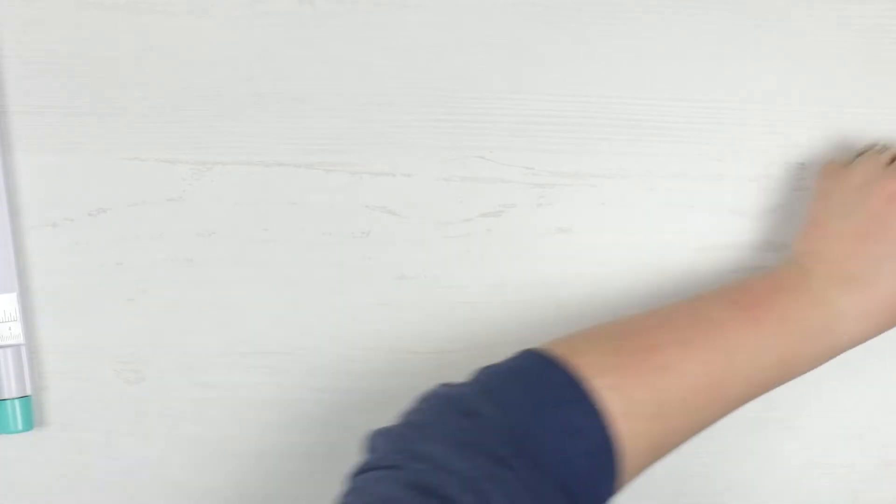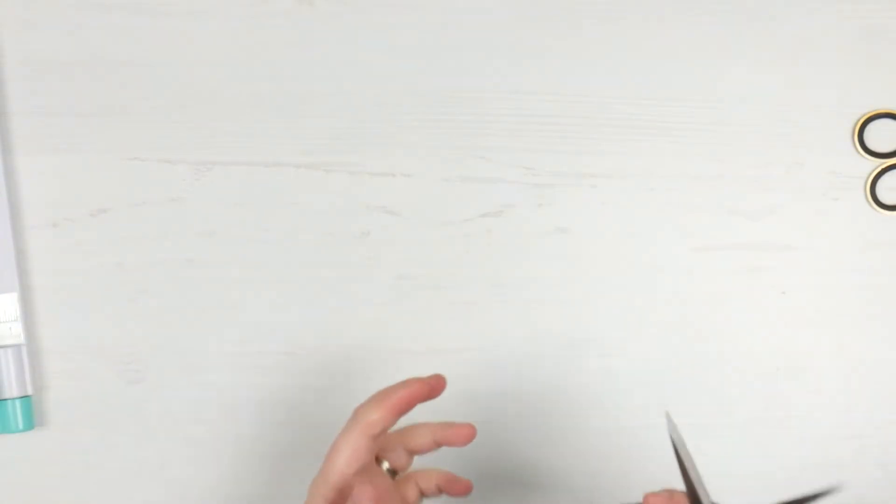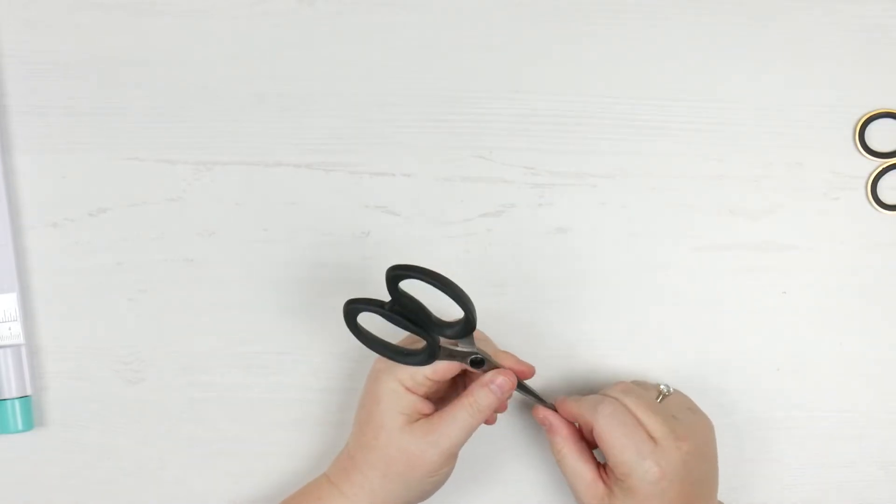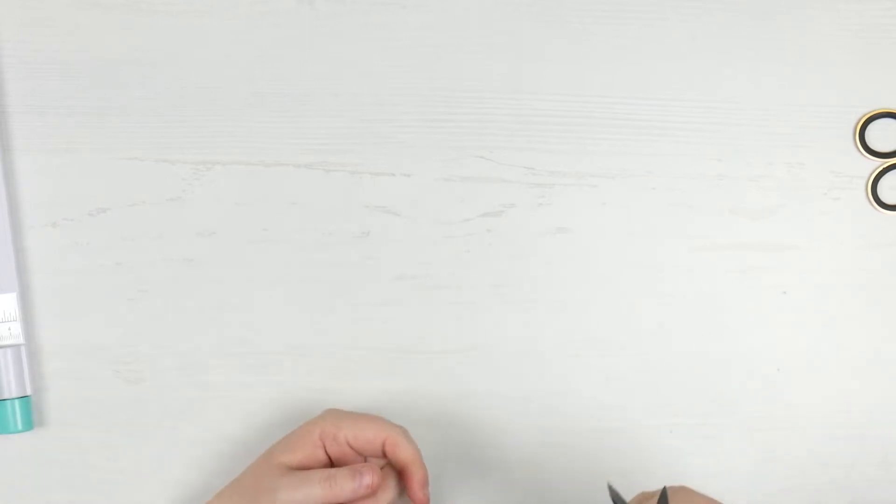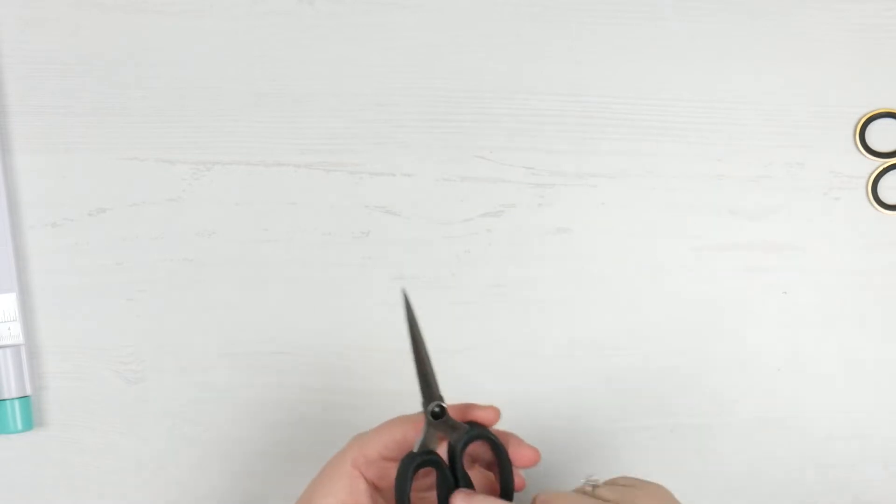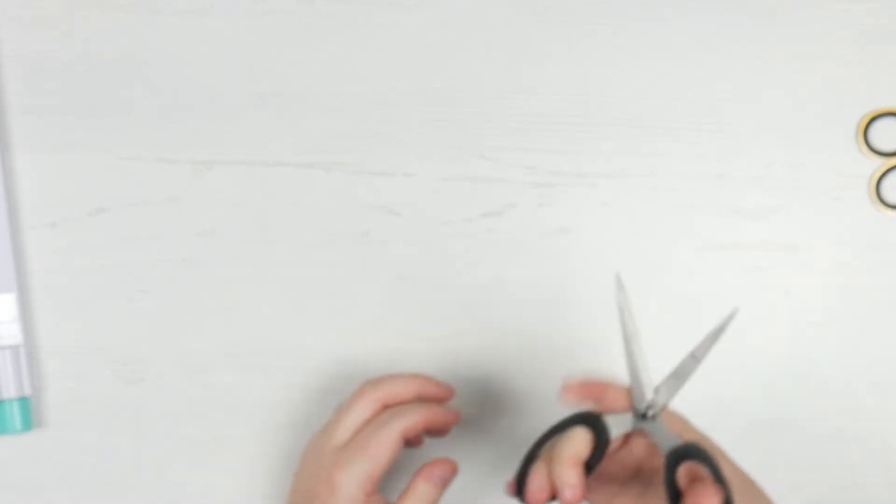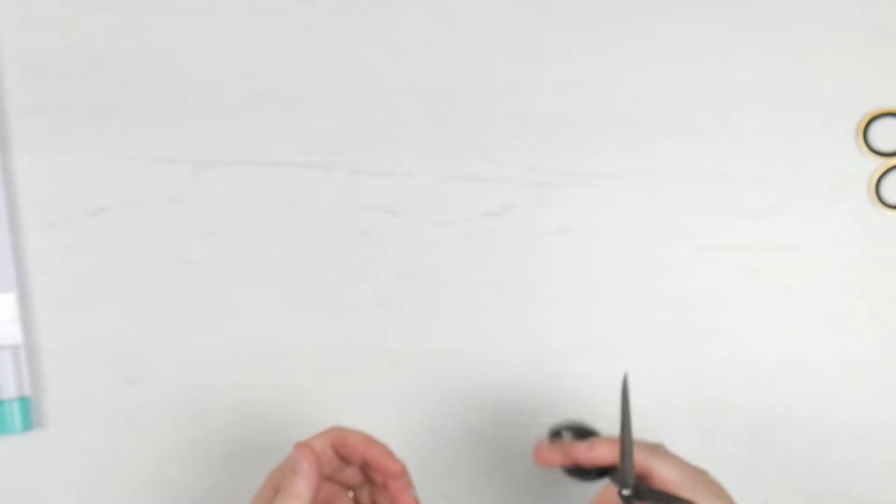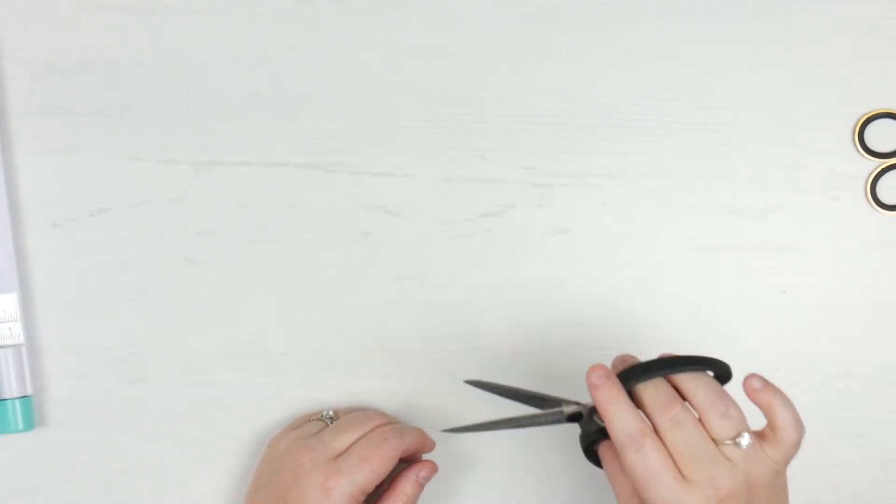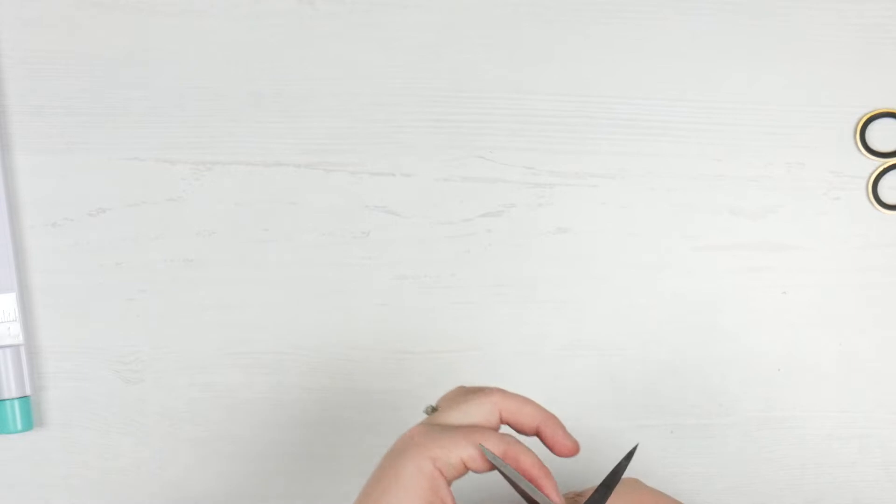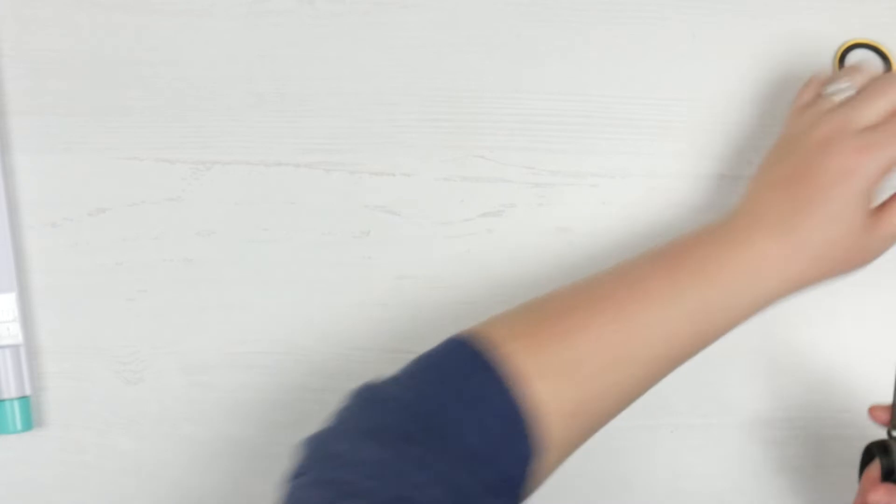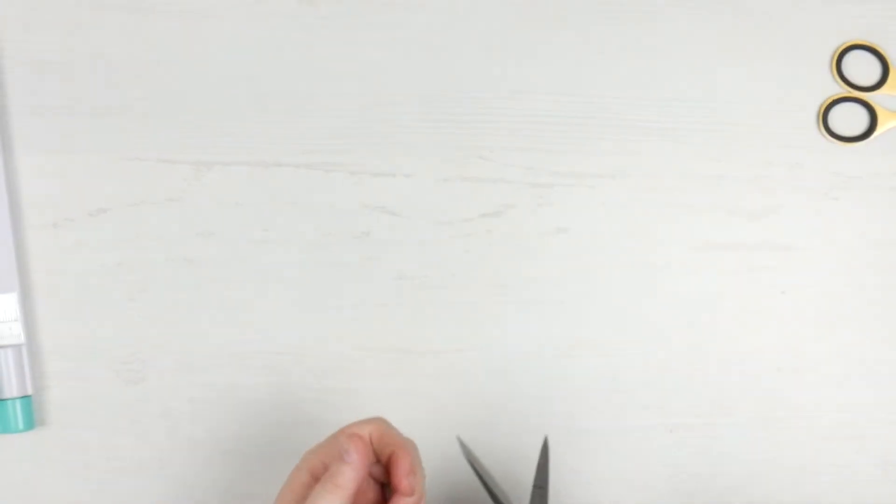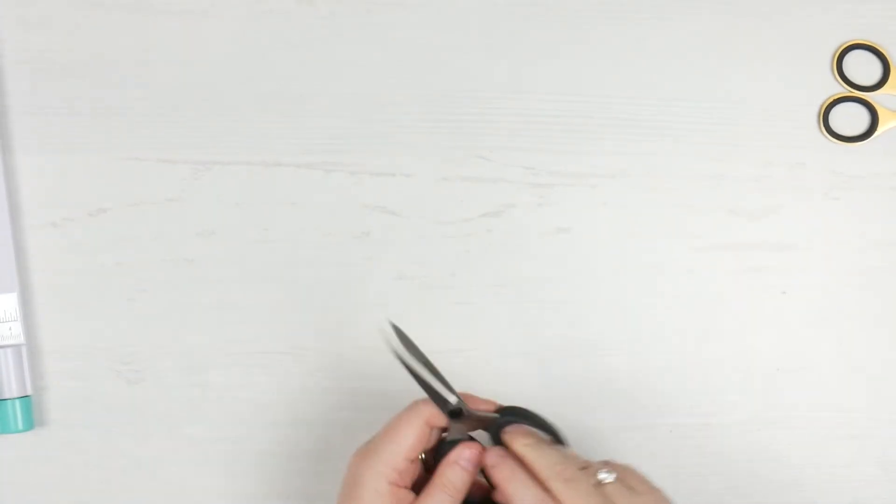That's the first pair. The second pair were a pair I invested in based on lots of YouTube watching and lots of recommendations. These are the tonic haberdashery scissors. I think these are the small ones. I love that the handles are huge. My hands fit in there really comfortably. I can fussy cut for hours with these and my fingers don't feel a thing.